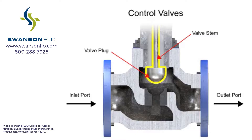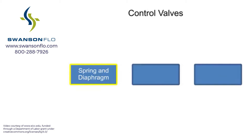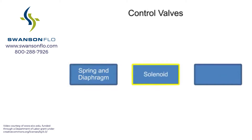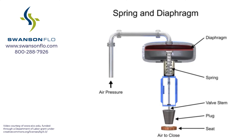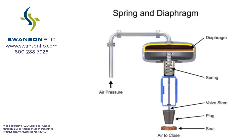Three actuator types are used in control valves and they include spring and diaphragm, solenoid, and motor. As the name suggests, the spring and diaphragm actuator uses a spring and a diaphragm to move the valve stem and plug.